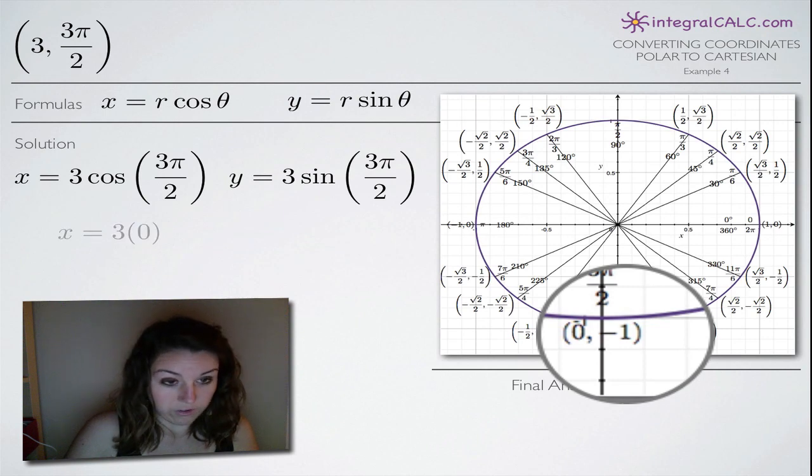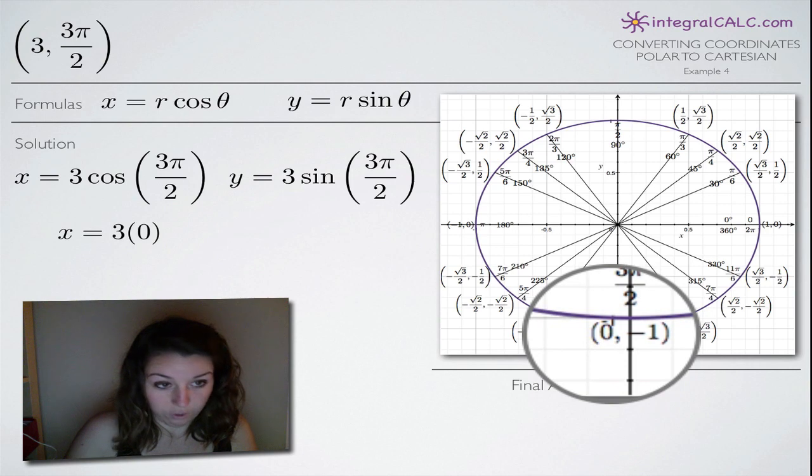So when we do that, we're going to get 3 times 0 because we plugged in 0 for cosine of 3π/2. And when we simplify, of course 3 times 0 is 0.